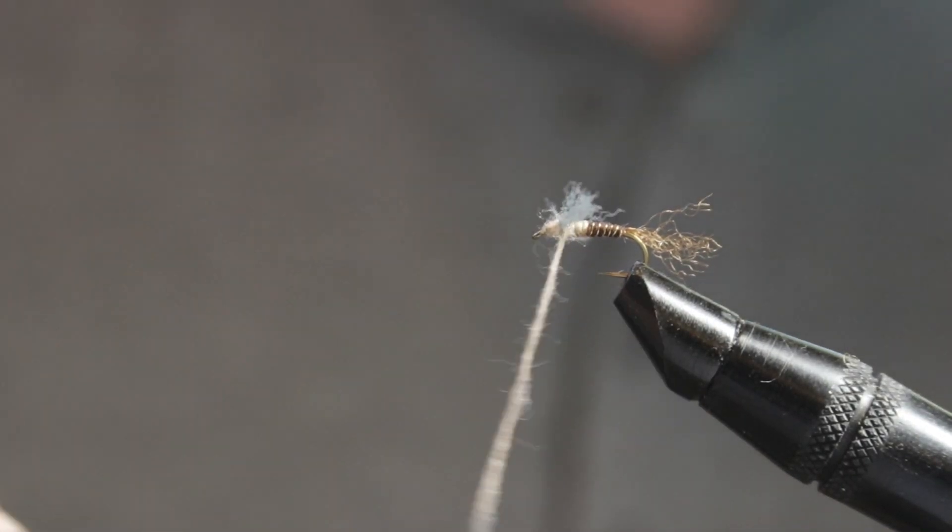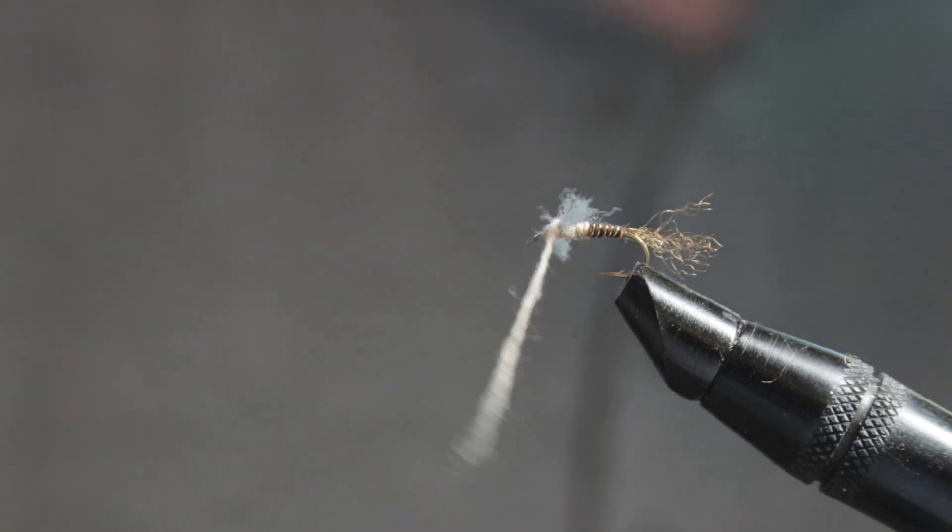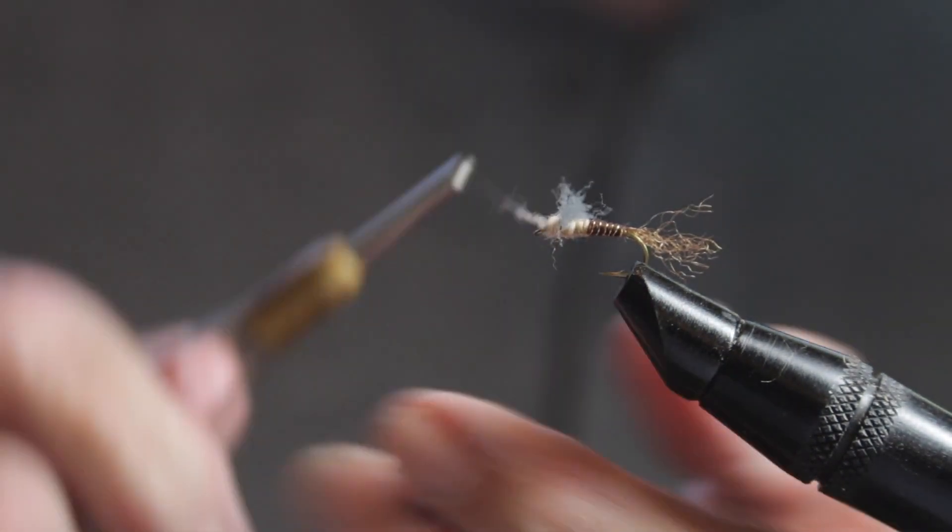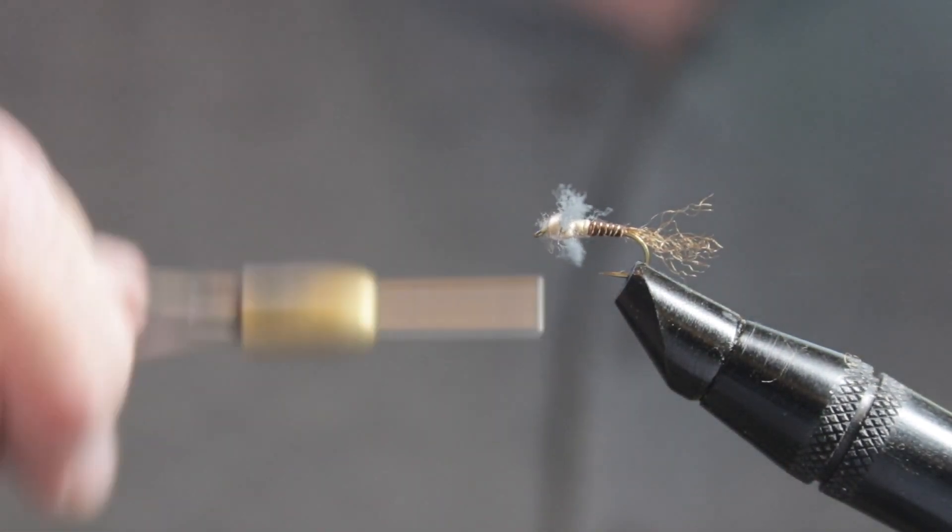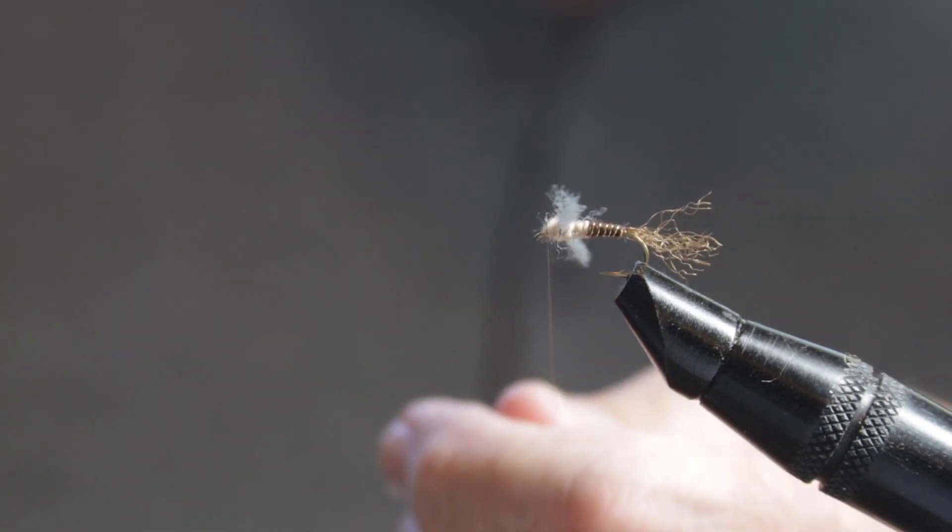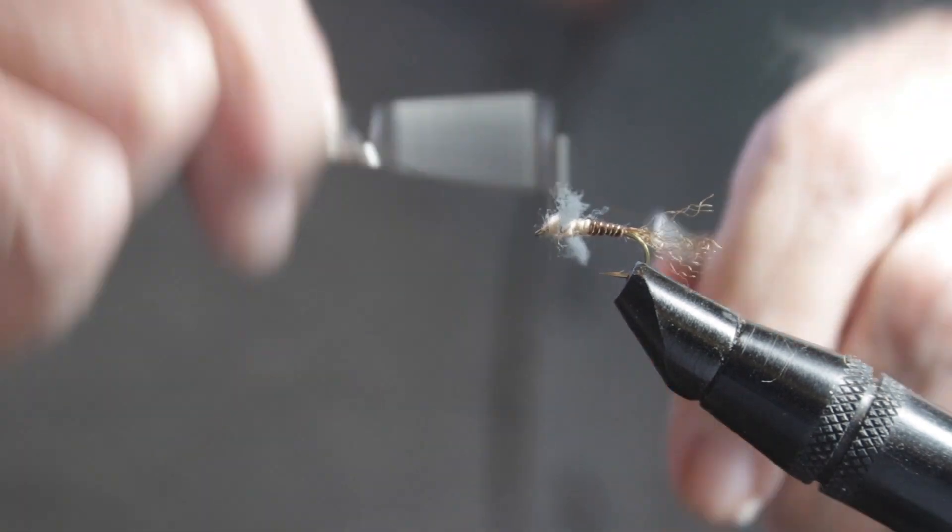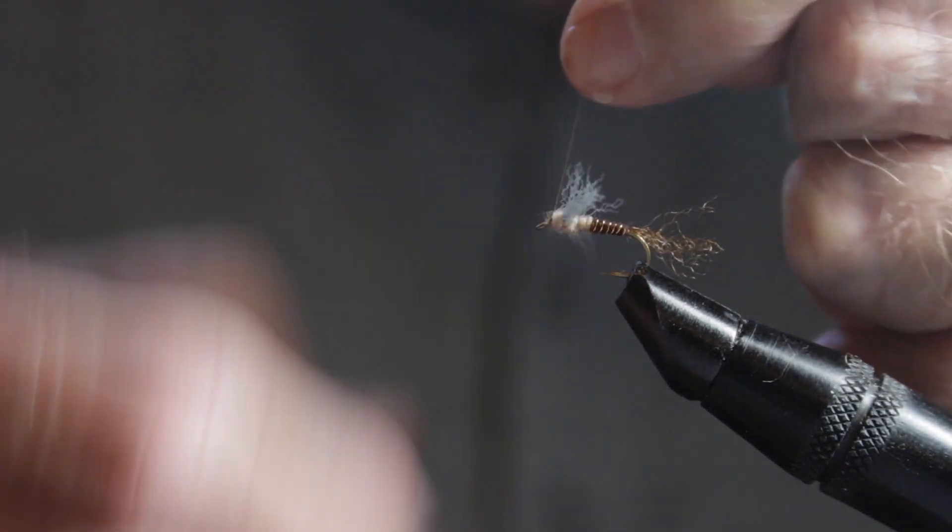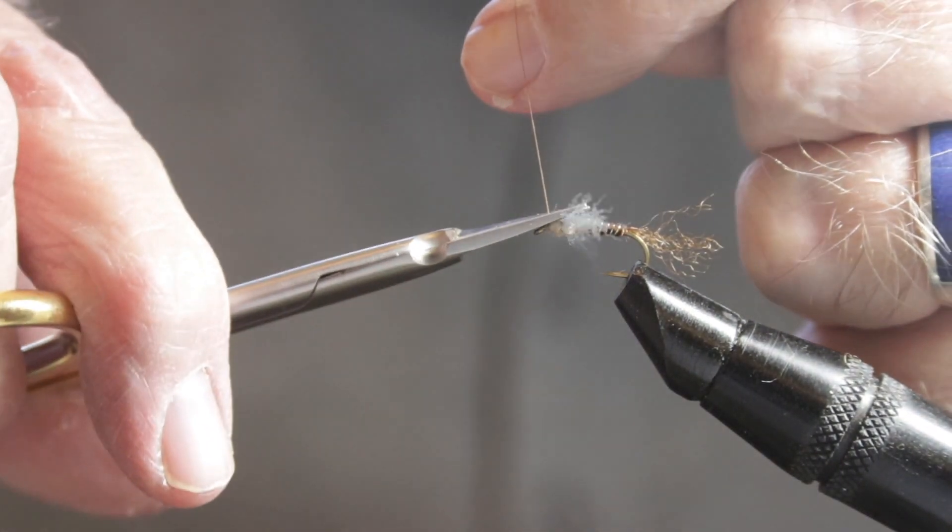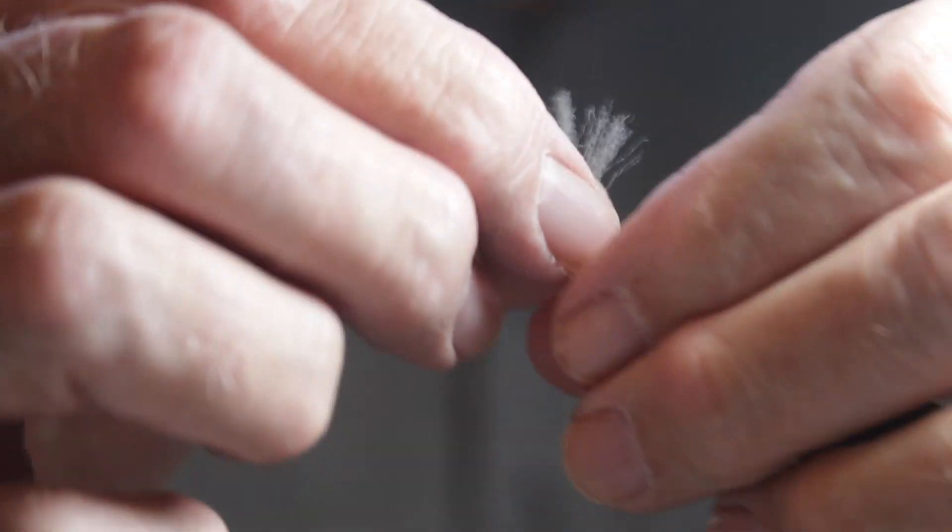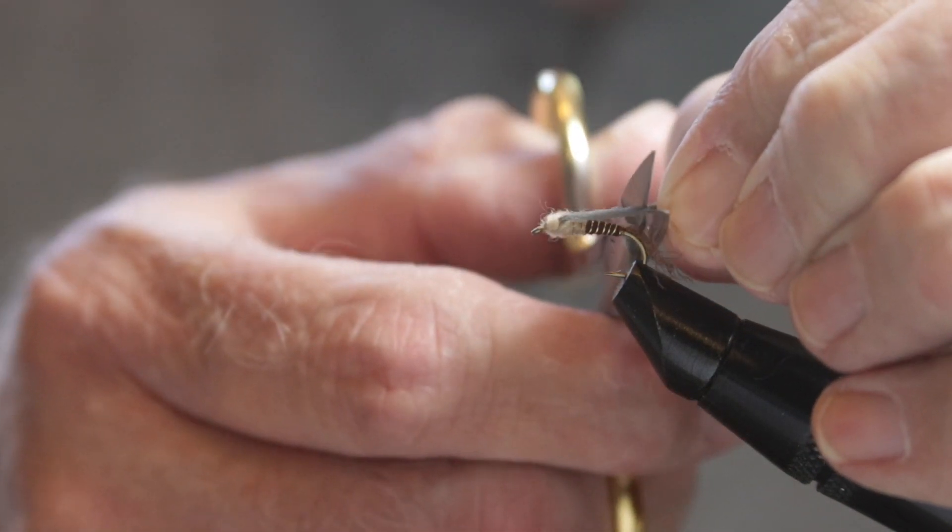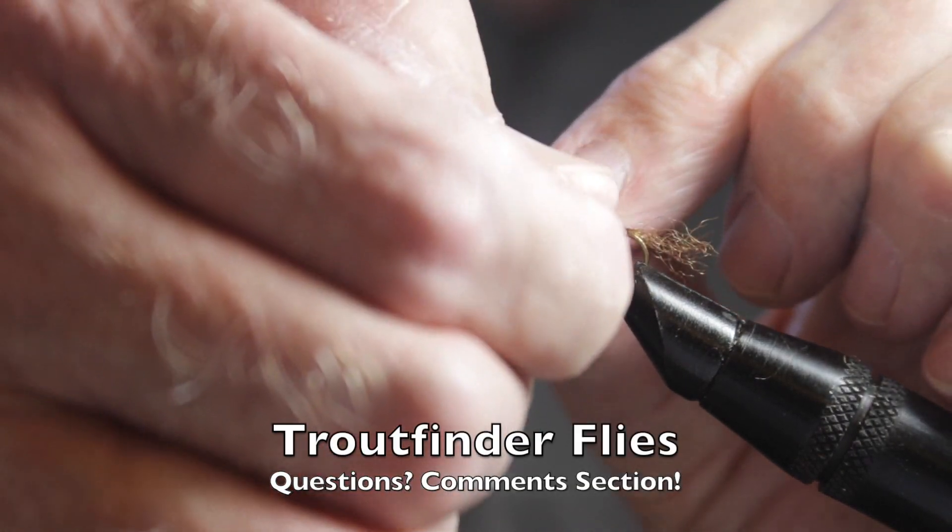And the next, and the final thing to do is we'll trim the wings. We can do this in a standard way. It's easier rather than try to struggle with worrying about whether everything's exact. After we whip finish, we'll take the wings in between our thumb and index finger, stand them up and bring them back toward the bend of the hook. And we'll use the bend as a guide so that you're just about even with the hook bend. And trim them. And that's our version of the Hendrickson Cripple.